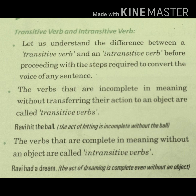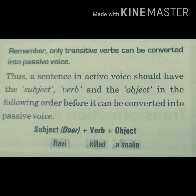In the first sentence, 'Ravi hit the ball,' we have an object — that is why it is a transitive verb. In the second sentence, 'Ravi had a dream,' we don't have an object. Only transitive verbs can be changed into passive voice. Intransitive verbs cannot be changed into passive voice. So remember, students, only transitive verbs can be converted into passive voice.